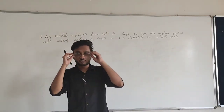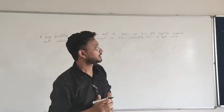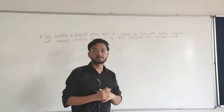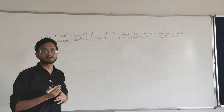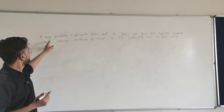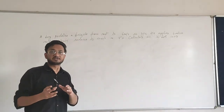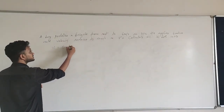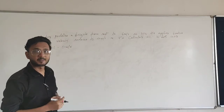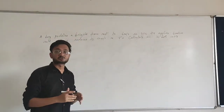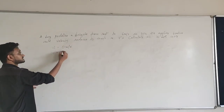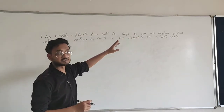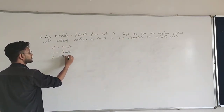Now we will solve the example from the textbook. The problem states that a bicycle accelerates from rest to 6 meters per second in 30 seconds. The statement 'from rest' means it is in a stationary position, which means the initial velocity of the bicycle is 0 meters per second. The final velocity is 6 meters per second, and the time is 30 seconds.